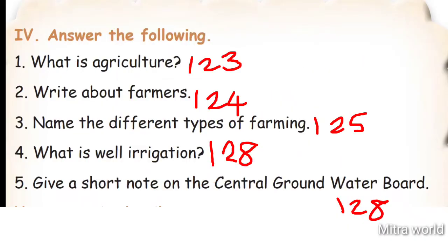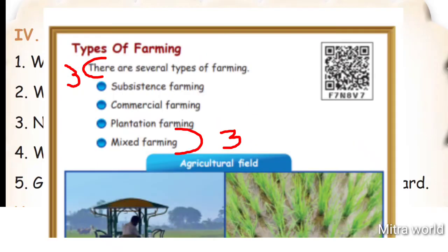Question 3: Name the different types of farming. Take page number 125. Types of farming: There are several types - Subsistence farming, Commercial farming, Plantation farming, and Mixed farming.